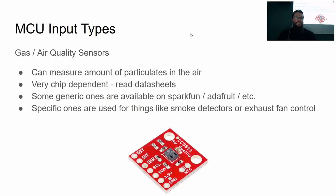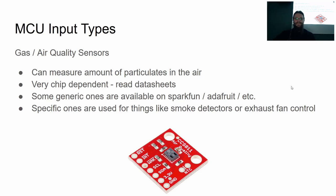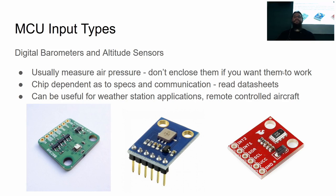There are gas and air quality sensors — these can measure particulates in the air. It's very chip-dependent: some are general 'hey your air is kind of dirty' sensors, while others detect a particular chemical and only that chemical. Generic ones are available with breakout boards and are kind of fun to play around with. Smoke detectors are a common example, but those typically have expensive sensors with radioactive isotopes in them, so they're harder to get unless you harvest them from a smoke detector.